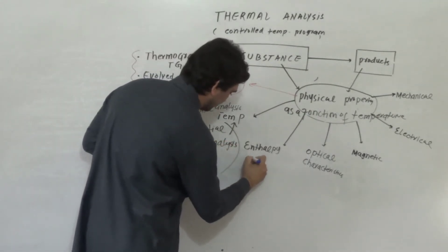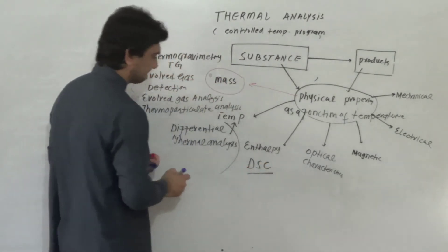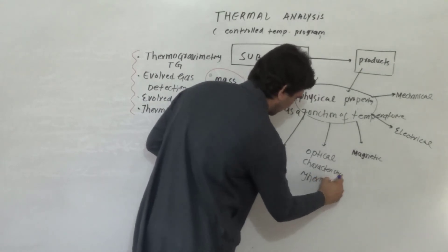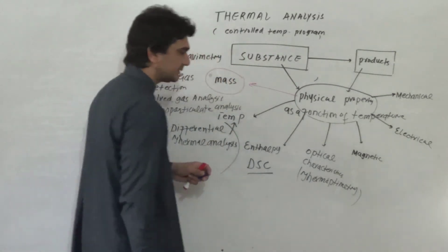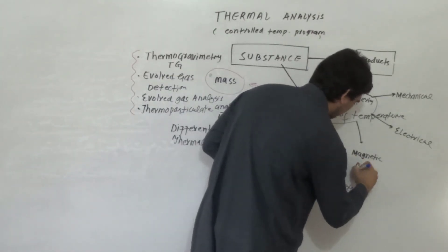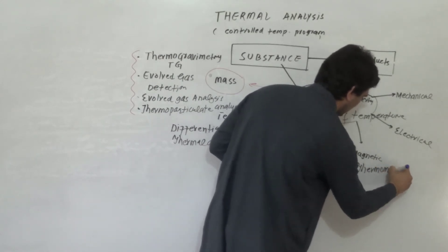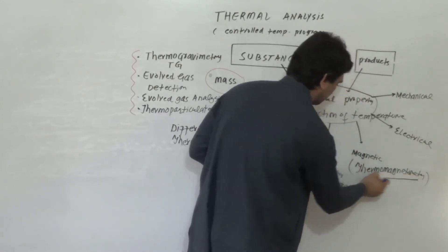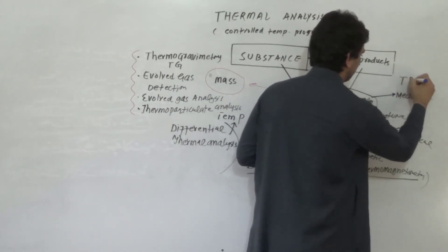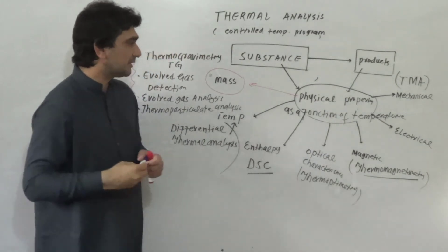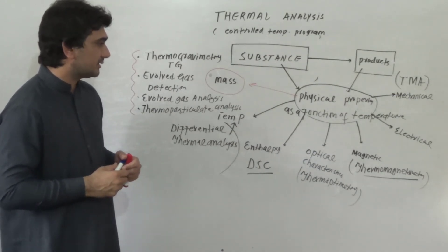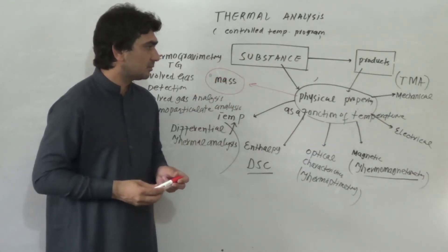Differential scanning calorimetry, or DSC, is a technique where heat flow is measured. Thermooptometry is a technique where optical properties are measured. Thermomagnetometry is another technique where magnetic properties of substances as a function of temperature are measured. Similarly, thermomechanical analysis, or TMA, measures the displacement of the sample — its shrinkage or change in volume or size as a function of temperature.